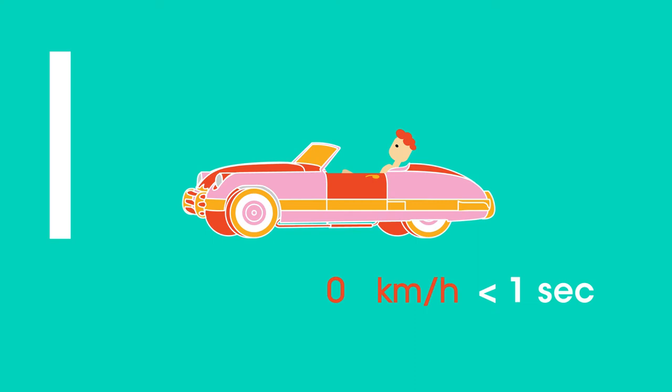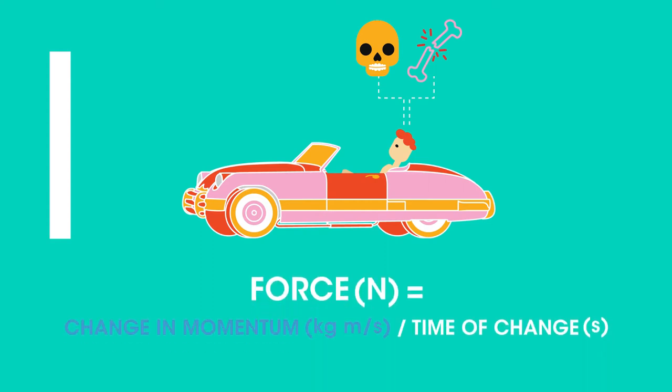During a car crash, the momentum of the passengers decreases rapidly from a large number to zero in less than a second. This places huge forces on them which can be lethal or cause serious injury. We can calculate the force acting on the passengers using this equation: force equals change in momentum divided by time of change, where force is measured in Newtons, momentum in kilogram meters per second, and time in seconds.